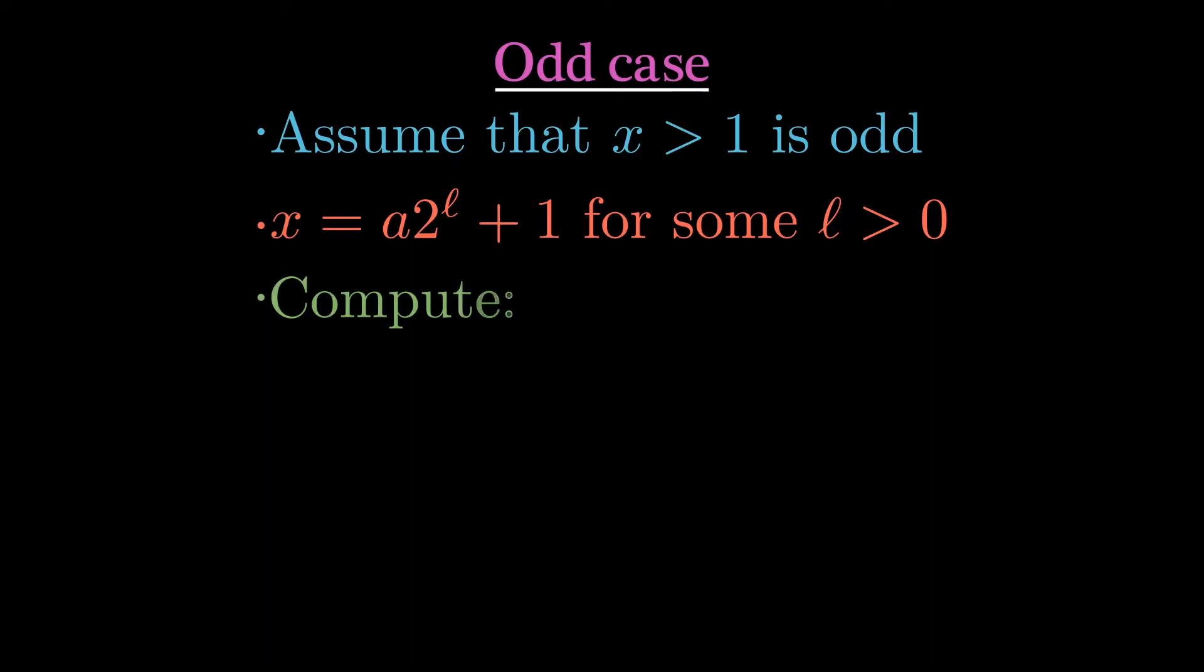Now we compute. If x is a times 2 to the l plus 1, then x squared is a squared times 2 to the 2l plus 2a times 2 to the l plus 1. Note by rearrangement that each of the first two terms is divisible by 2 to the l plus 1, and therefore, if x is 1 mod 2 to the l, then x squared is 1 mod 2 to the l plus 1.